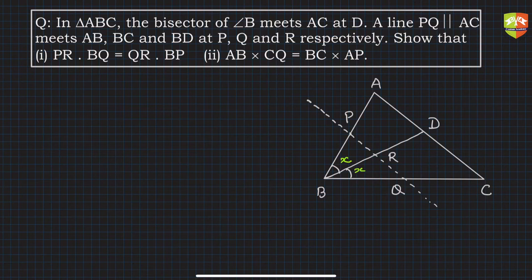The bisector creates two equal angles x. A line PQ is parallel to AC (given), and the points P, R, and Q are where the line meets the triangle: P is on AB, Q is on BC.